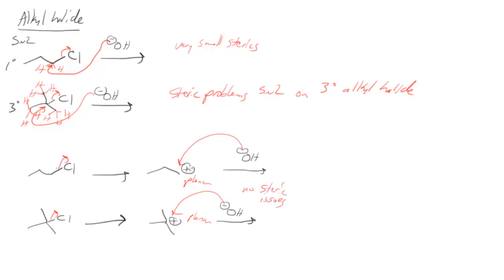It's much easier to bring our hydroxide into the planar intermediate than it was back here to come in and have to displace the halogen off of the sp3 hybridized carbon that already has four groups around it. These carbons only have three groups around them.